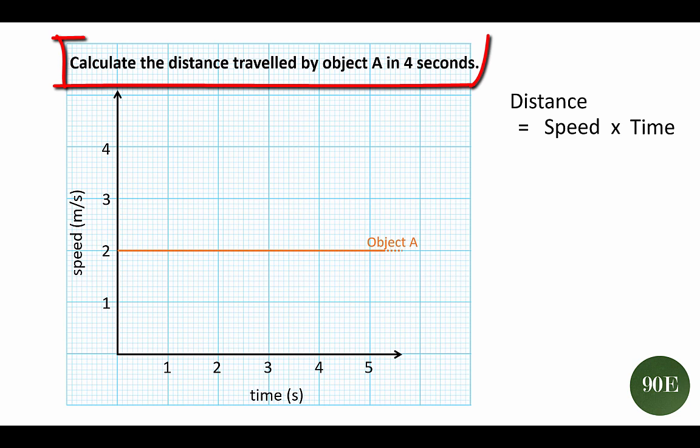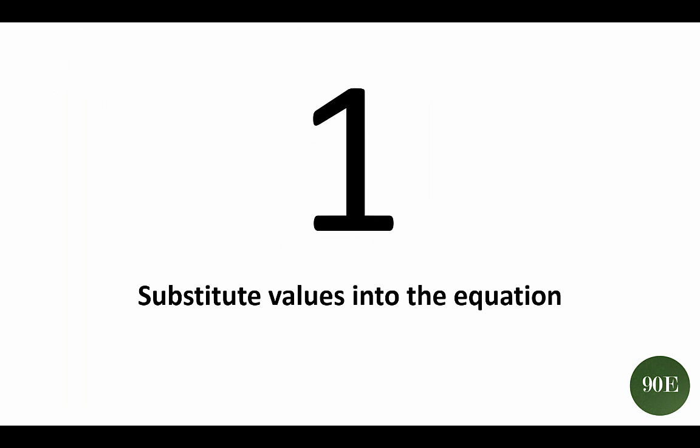Here we're asked to calculate the distance traveled by an object in 4 seconds. We have two ways of tackling this problem. The first is simply to substitute values from the graph and question into the equation, so let's do that first.